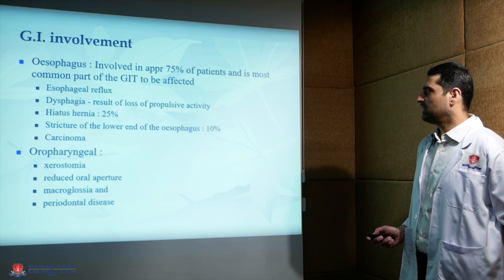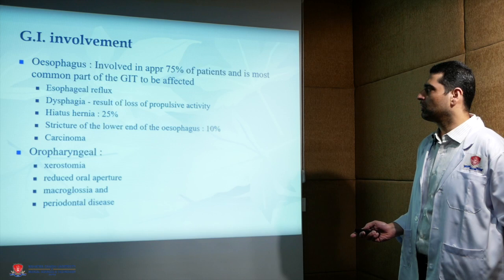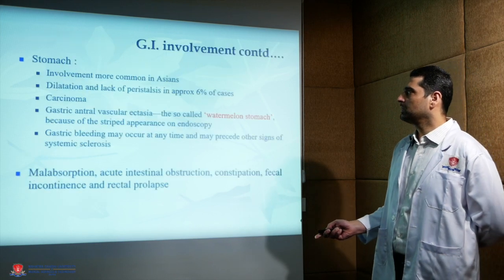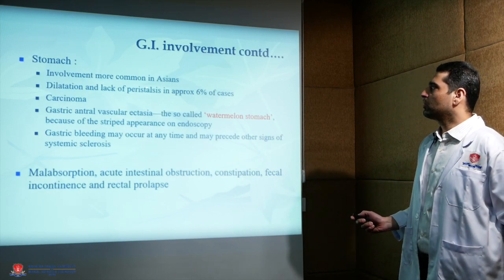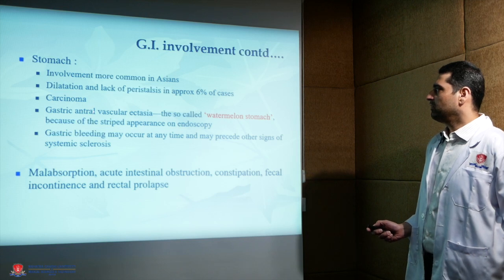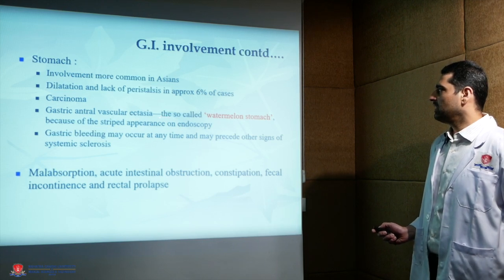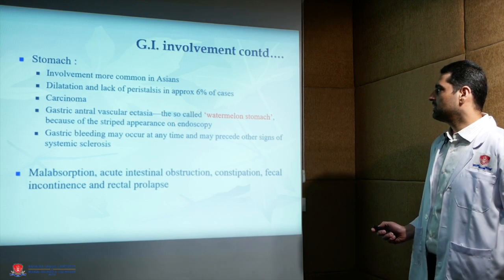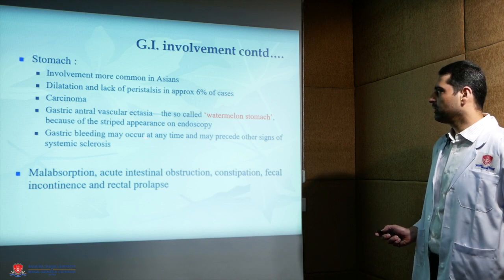Various other GI manifestations include xerostomia, reduced oral aperture, and macroglossia. Stomach involvement is more common in Asians, and gastric antral vascular ectasia can be appreciated on endoscopy in the form of watermelon stomach, due to its striped appearance.